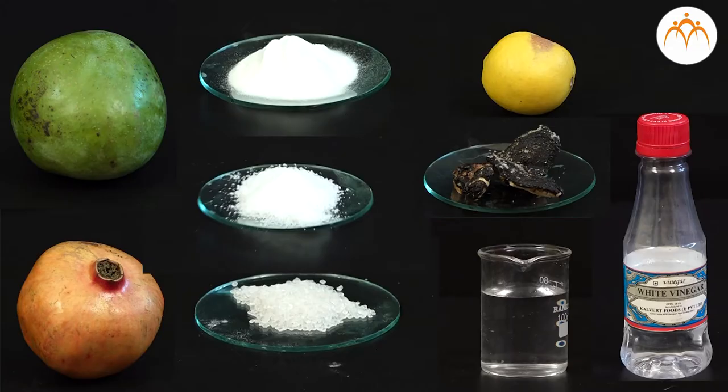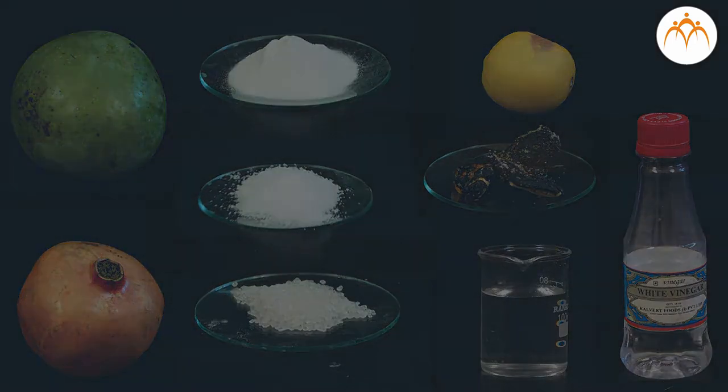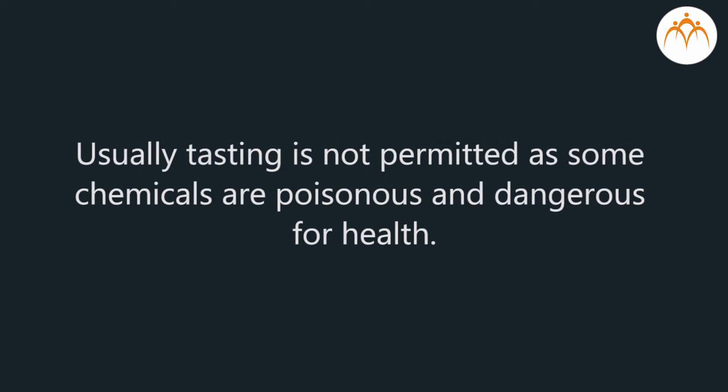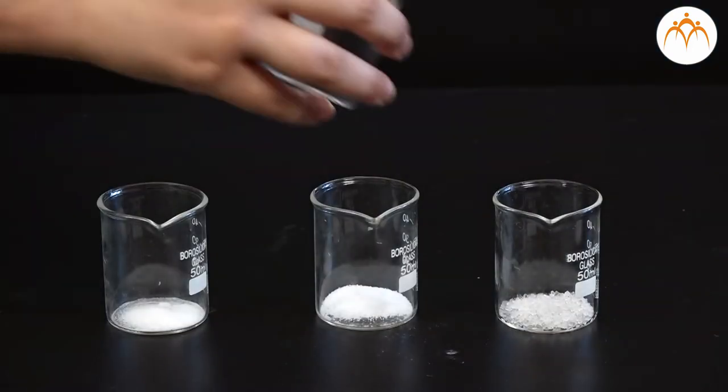Also segregate substances on the table as per their test type. As these substances are used in food and they are known to us, it is safe to test them. But otherwise you should not test any chemical in a chemistry laboratory without permission of the teacher. Usually testing is not permitted as some chemicals are poisonous and dangerous for health.